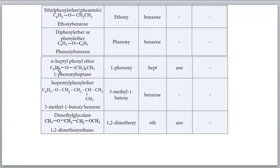For n-heptyl phenyl ether: benzene ring plus seven carbons in a straight chain gives n-heptyl phenyl ether. For isopentyl phenyl ether: a benzene ring with a five-carbon isopentyl group. When both groups start with p (isopentyl and phenyl), compare the second letter: 'e' in isopentyl versus 'h' in phenyl - 'e' comes first, so isopentyl phenyl ether.